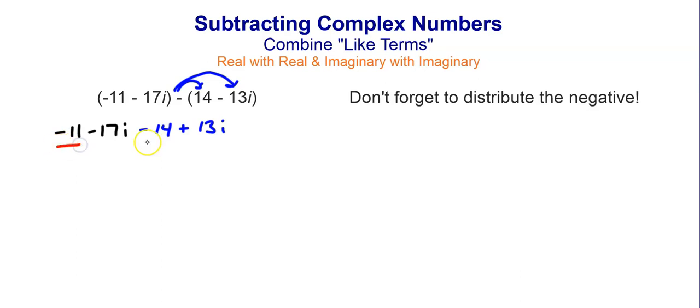I have negative 11. I have negative 14. Those are both just real numbers. So I have minus 11 minus 14. So negative 11 minus 14 is just negative 25.